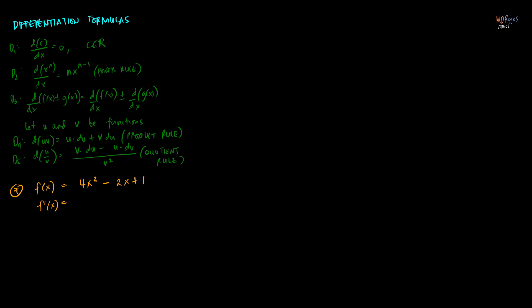In the first term, as discussed in the previous video, if you have a product of a constant and a function of x, you can just set aside the constant and take the derivative of the power of x using the power rule. So in the first term, it's just 4 — set aside the constant and take the derivative of x squared. Using the power rule, we bring down the exponent, copy the base, and subtract 1 from the exponent: 2 minus 1 gives just 1.